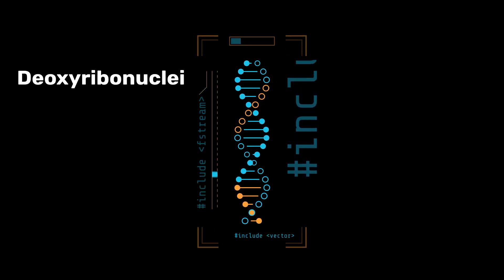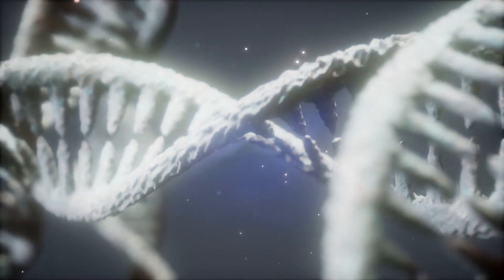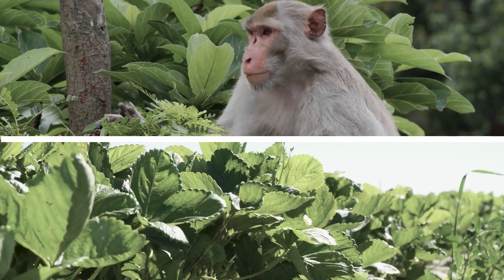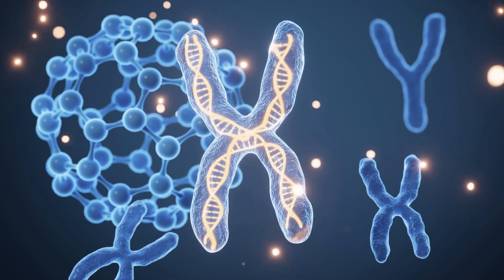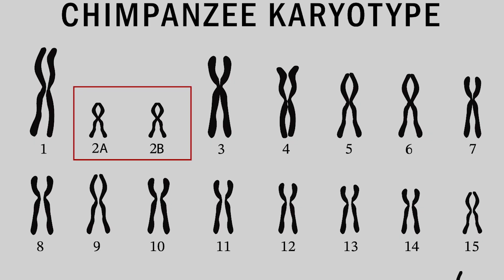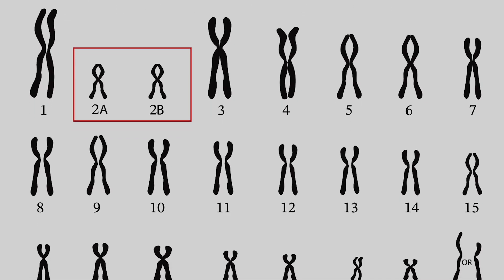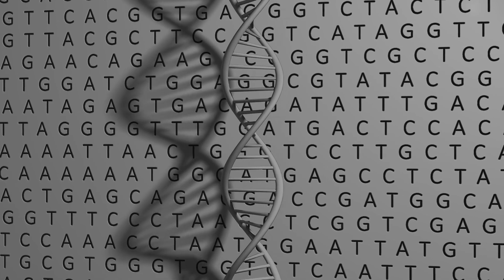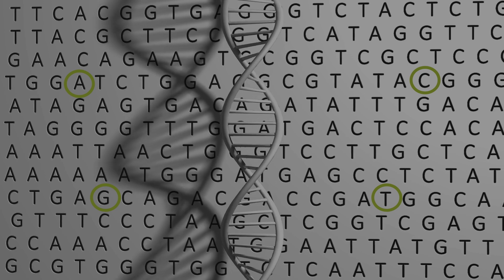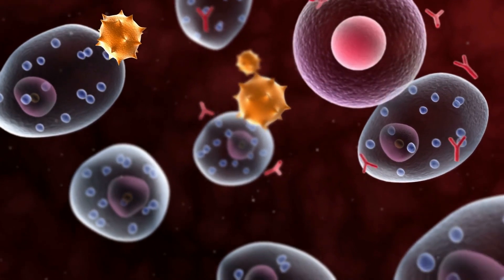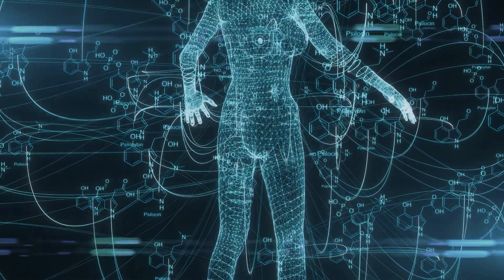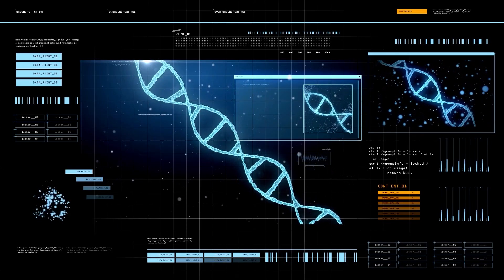DNA stands for deoxyribonucleic acid. They are macromolecules that store the mass majority of genetic information that is essential to life in multicellular organisms, such as plants and animals. In humans, DNA is coiled very tightly into 23 pairs of structures called chromosomes. DNA is made up of units called nucleotides. There are four nucleotides found in DNA: adenine, cytosine, guanine, and thymine. These chemical bases form sequences called genes, which contain the instructions for performing a function in a cell or making a certain protein. Some of these proteins can make up physical characteristics, known as our phenotypes. Our collective genes are known as the genome.